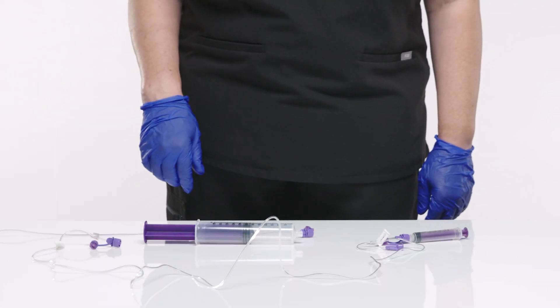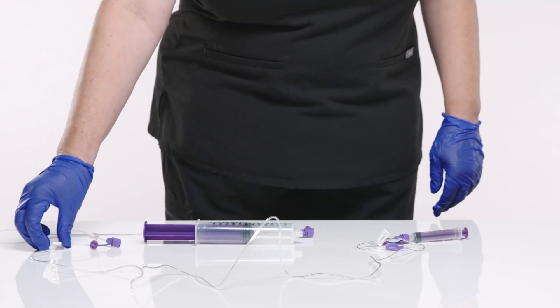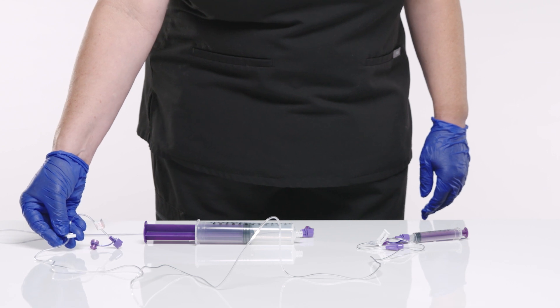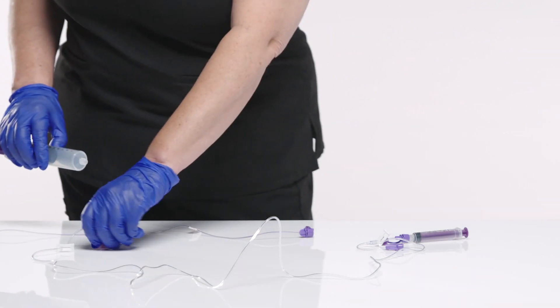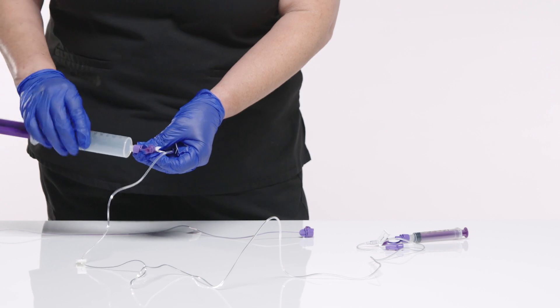Make sure the extension set is not clamped before connecting to the EnFit syringe. Connect the EnFit syringe to the male EnFit connection at the distal end of the extension set.